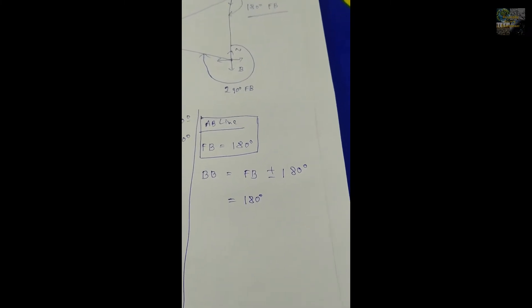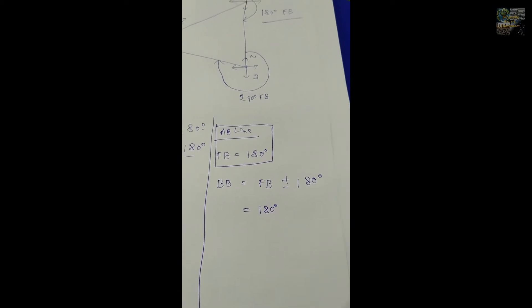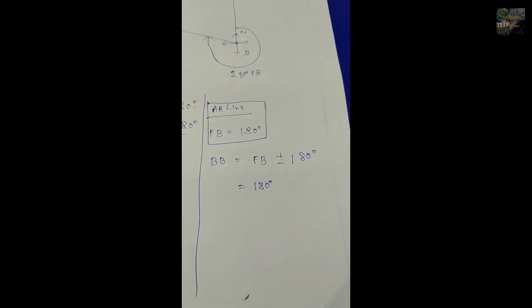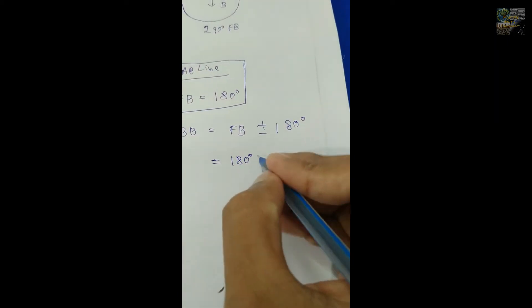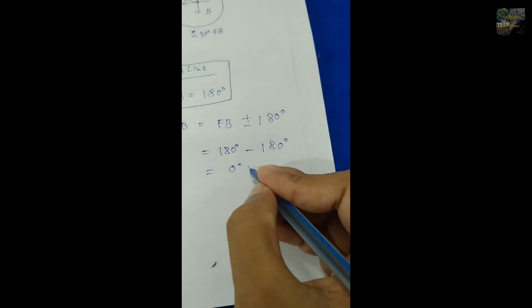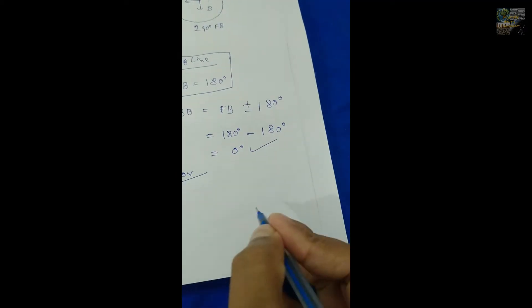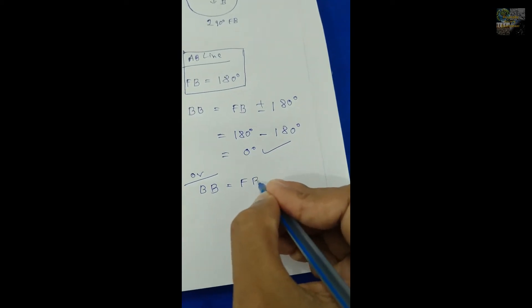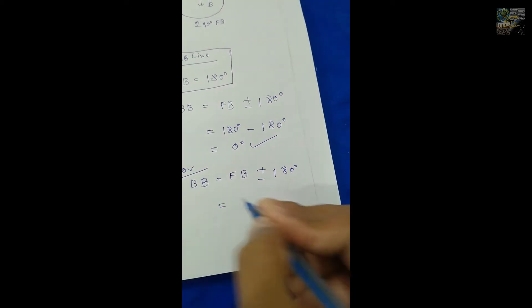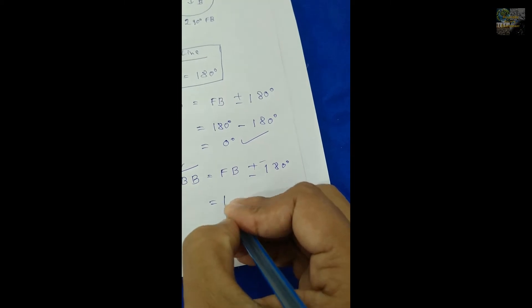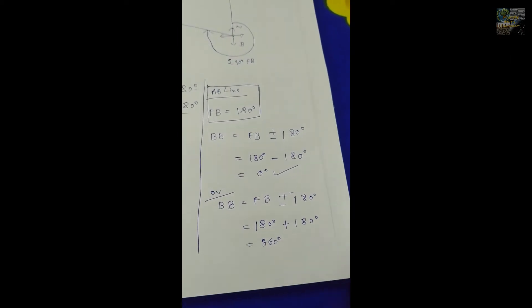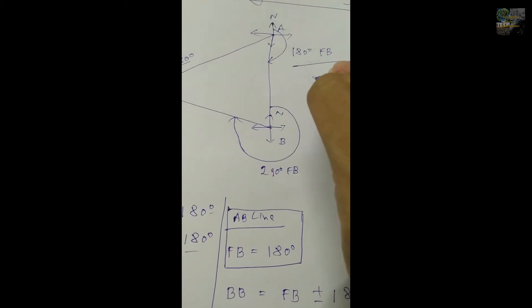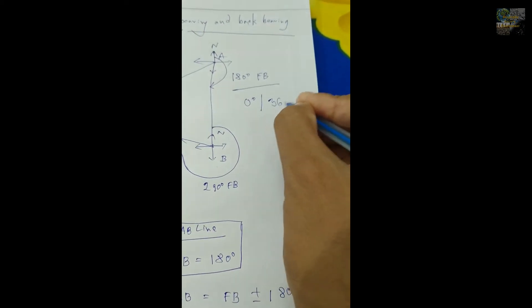Here I am going to show both methods. First method: 180 minus 180 equals 0 degrees. Second method: BB equals FB plus 180 degrees, so 180 plus 180 equals 360 degrees. So you can see that 0 degrees and 360 degrees will both be the back bearing of this line. Both values are correct in case of back bearing.